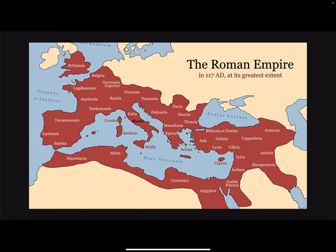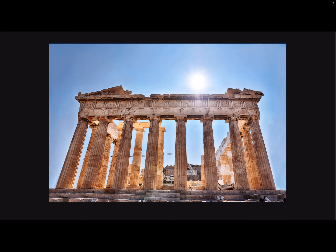Both ancient Egypt and ancient Greece were invaded by Rome and their cultures assimilated. The Romans adopted many ancient Greek gods, myths, and legends, and Roman architecture was heavily inspired by Greek architecture.